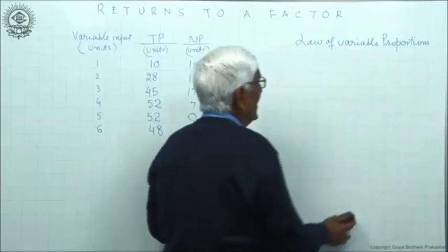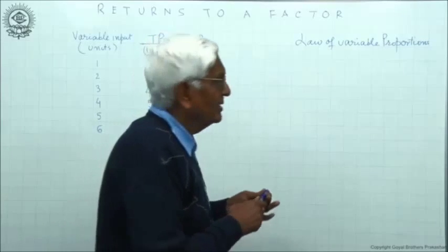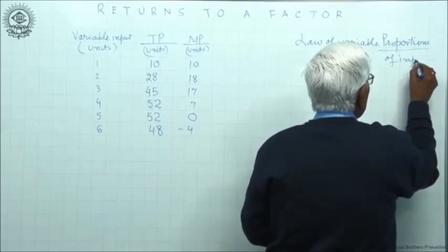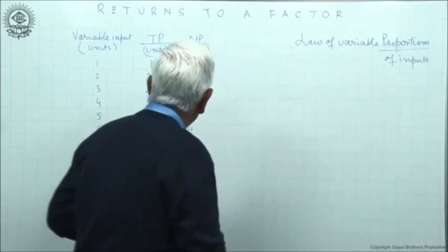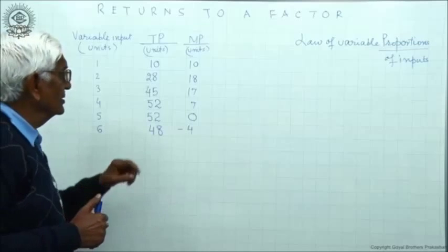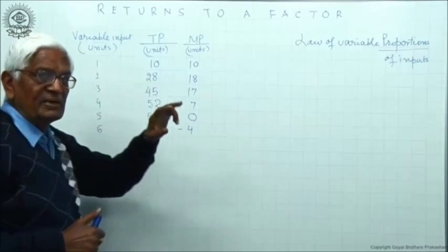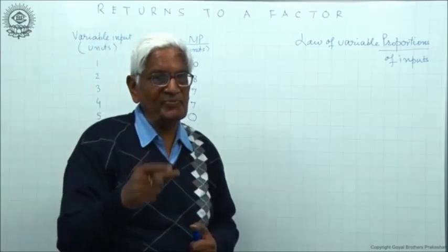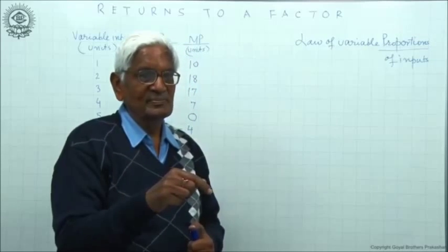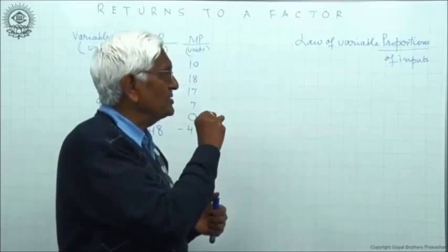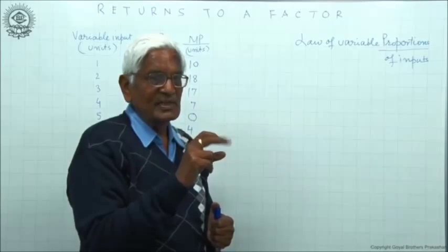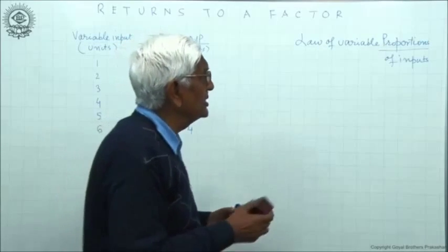Why is it called variable proportions? Proportions means proportion of inputs. We are increasing only one input keeping other fixed. The proportion between variable input and fixed input is constantly changing. So if the proportion between two inputs is constantly changing, then what is the behavior of total output? The name is derived in this manner.